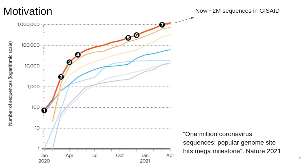The rapid growth of sequences in this pandemic created a challenge for phylogenetic reconstruction. Over 2 million sequences are currently available through the GCED database alone, with over 1 million sequences added in the last 3 months alone.